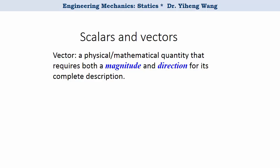A vector, on the other hand, needs to be specified not only by its magnitude but also by its direction. Common physical quantities that are vectors include force, velocity, acceleration, and moment.